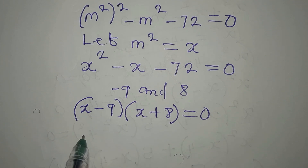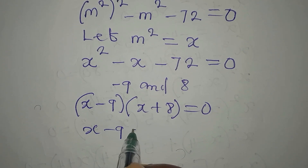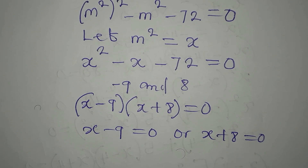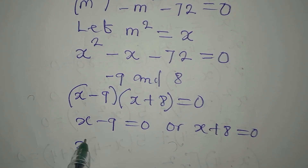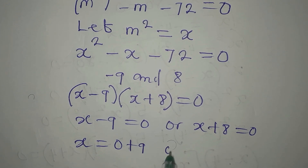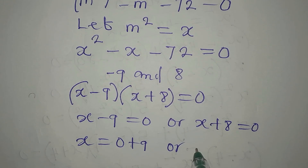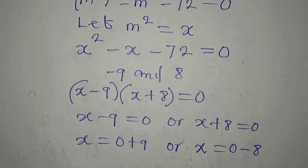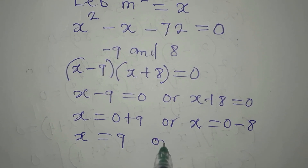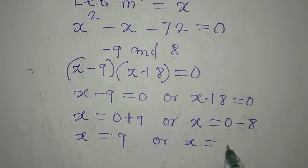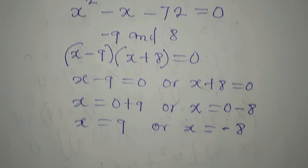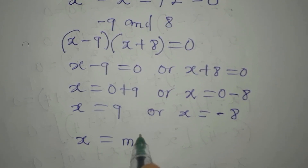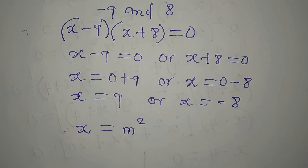So now it is either x minus 9 equals 0, or x plus 8 equals 0. From here, our x is equal to 9, or x is equal to negative 8.